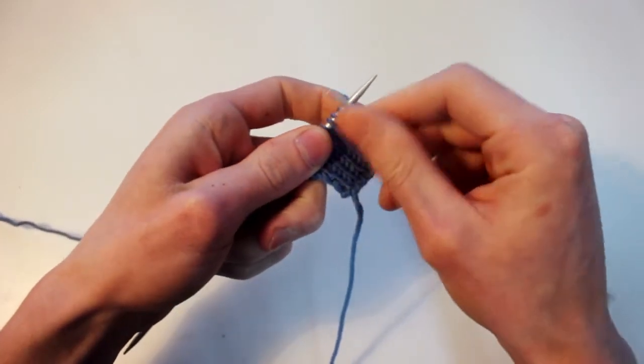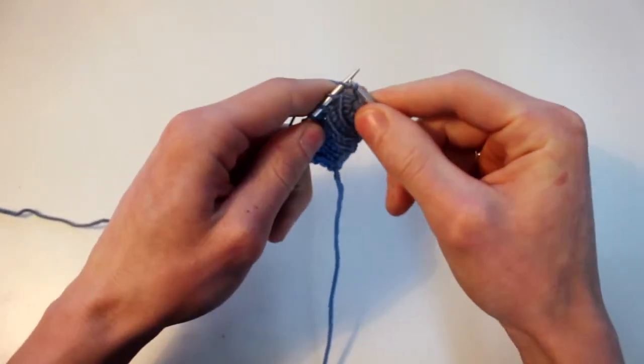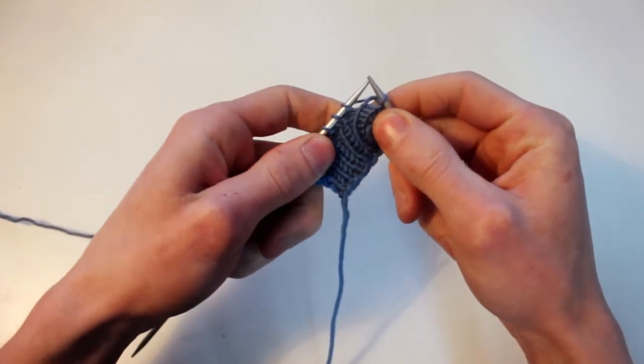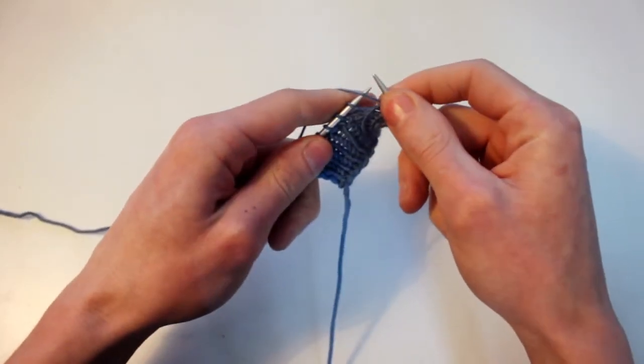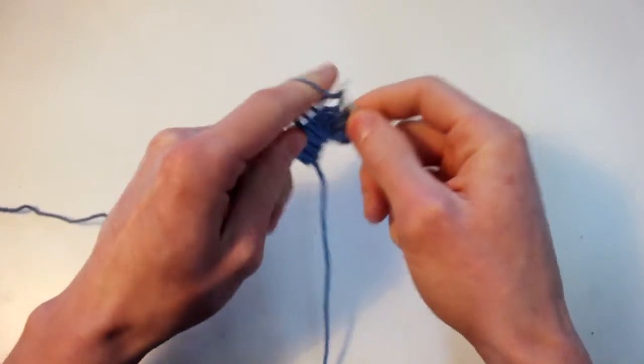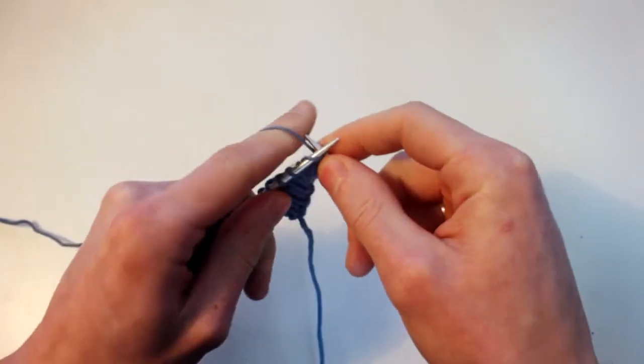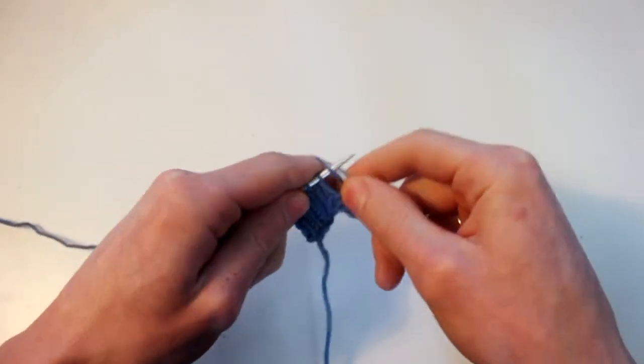So again here I'm going to do a knit stitch and I'm going to pull the yarn through. Give it lots of slack. Slip that work stitch off and then tighten. Then I can place the yarn up for the purl stitch. Do the same thing. And it's this give and take fluid motion.